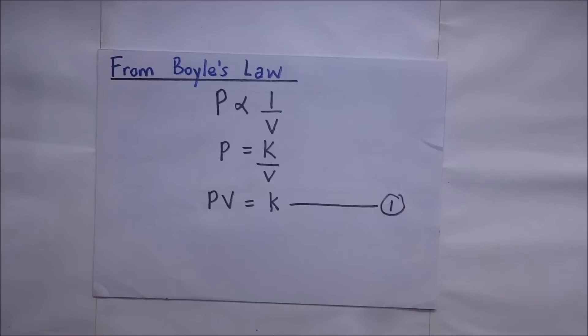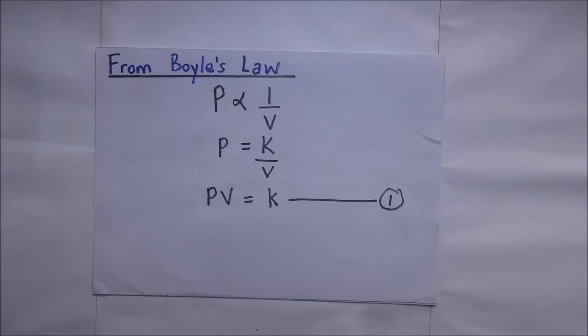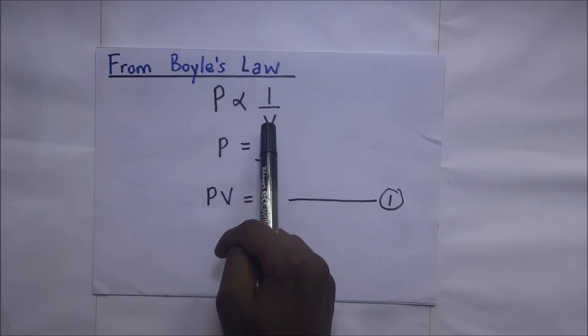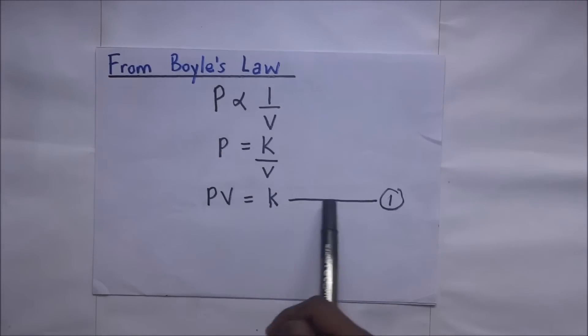Now of course we all know that there are three gas laws, and right before us we have an expression for Boyle's law. We definitely come up with the ideal gas equation from the three gaseous laws: Boyle's law, the pressure law, and Charles's law. Boyle's law, as I had earlier stated in our previous sessions, says pressure is inversely proportional to volume, and the expression is that PV is equal to a constant.